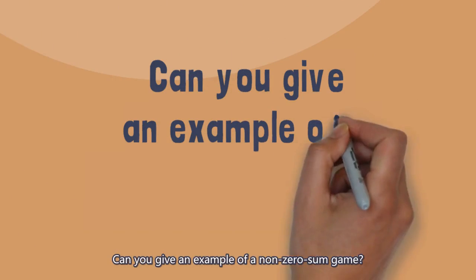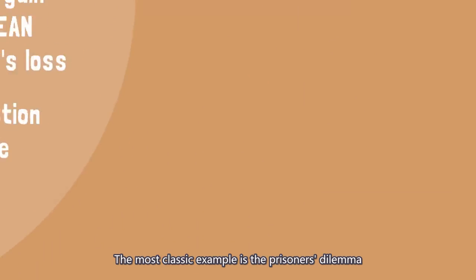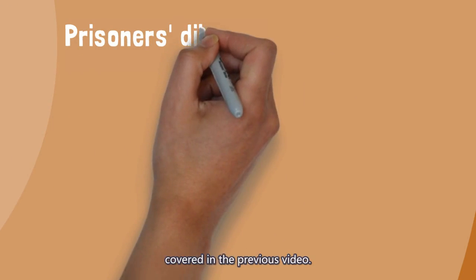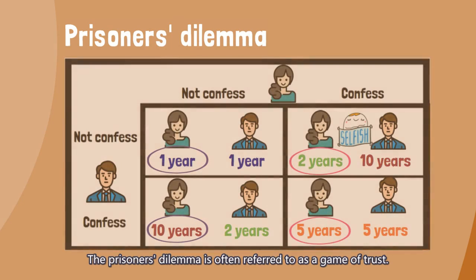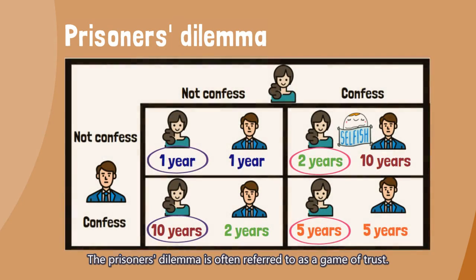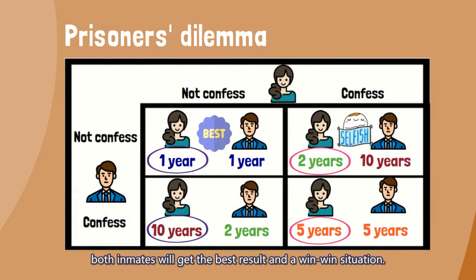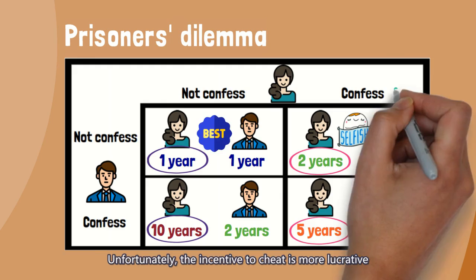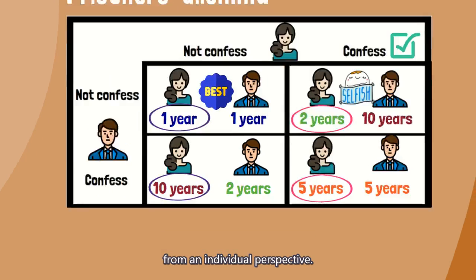Can you give an example of a non-zero-sum game? The most classic example is the prisoner's dilemma covered in the previous video. The prisoner's dilemma is often referred to as a game of trust. In deciding not to confess and trust the other player to do the same, both inmates will get the best result in a win-win situation. Unfortunately, the incentive to cheat is more lucrative from an individual perspective.